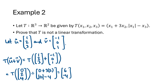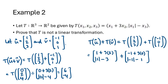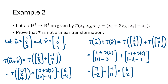Let u = (1, 2, 3) and v = (−1, 0, 1). Computing T(u + v) using the definition gives (6, −4). Computing T(u) + T(v) separately gives (6, −2). Since those two vectors are not equal, T does not respect vector addition. It doesn't matter whether T respects scalar multiplication — failing to respect vector addition is enough to show that T is not a linear transformation.